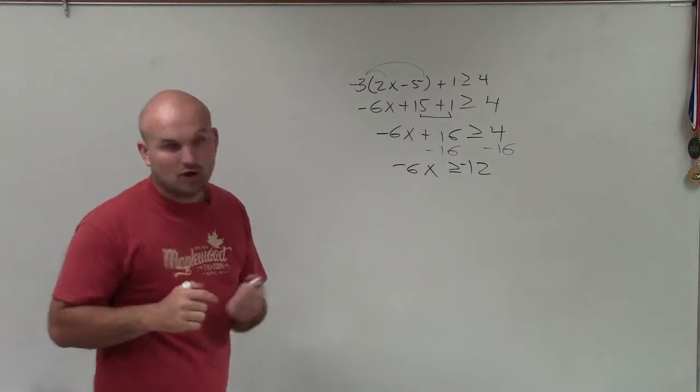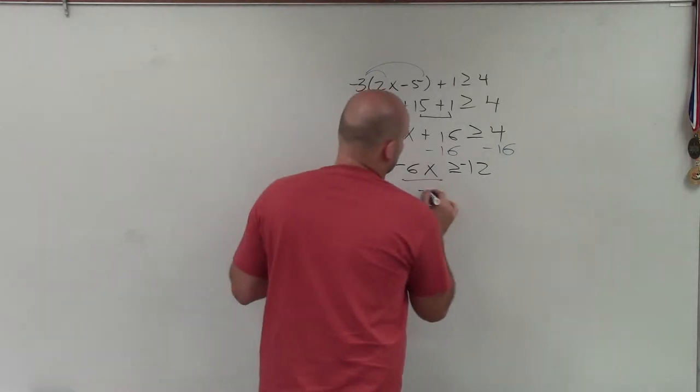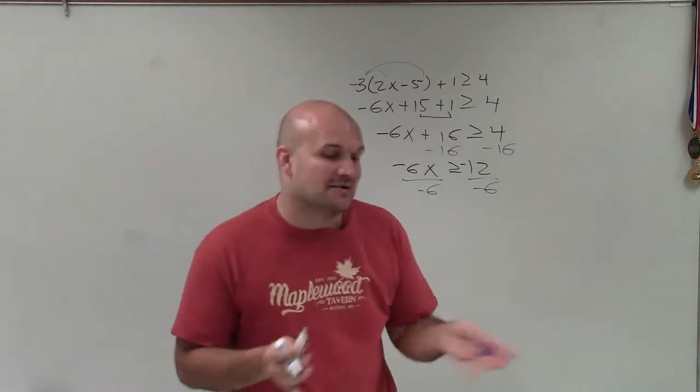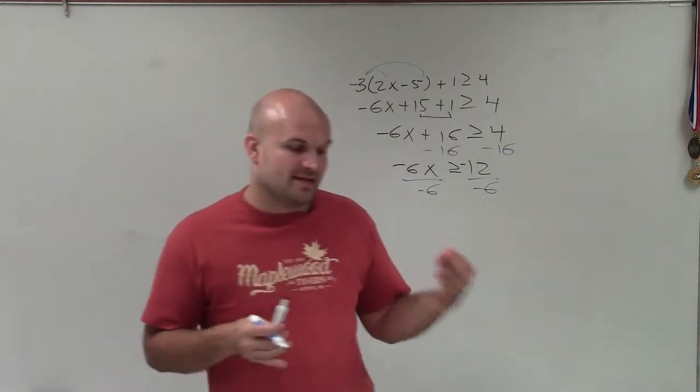Now to undo multiplying by negative 6, I need to divide by negative 6 on both sides. Very important, though. Remember, this is another way how inequalities differ from equations.